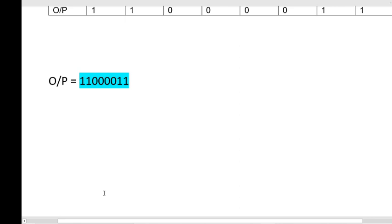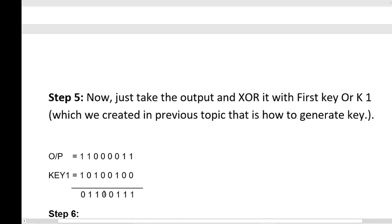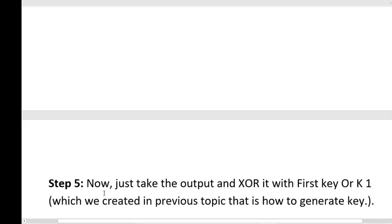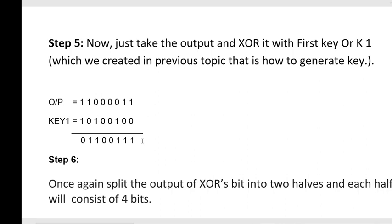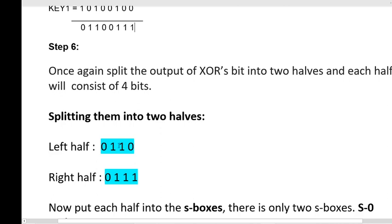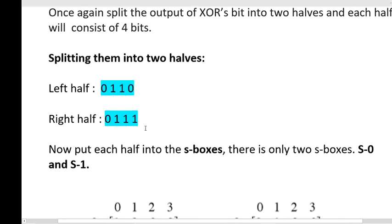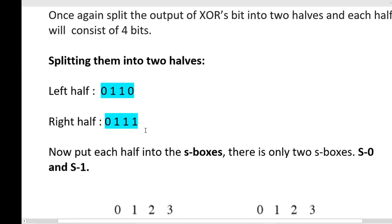In step five, perform an XOR operation between the output from step four and Key 1. The output from the previous step is 11000011 and Key 1 is 10100100. After performing the XOR operation the output is 01100111. In step six, split the output of the XOR operation into two halves: the left half is 0110 and the right half is 0111. The left half goes into S0 and the right half goes into S1.